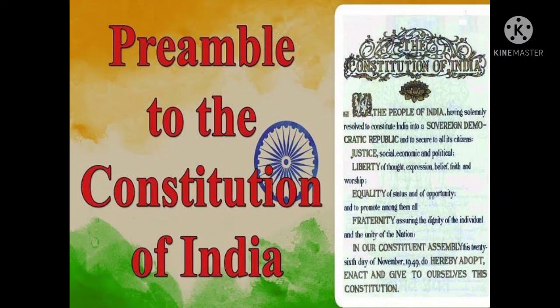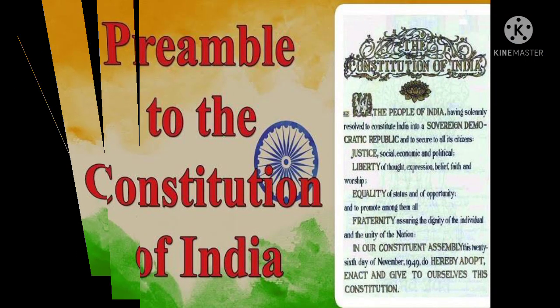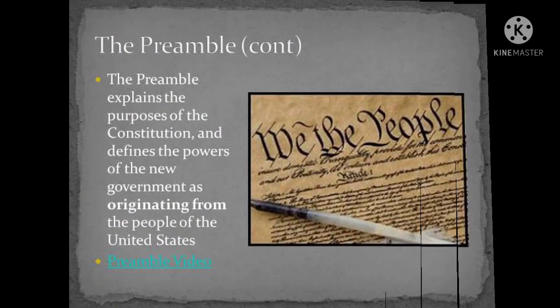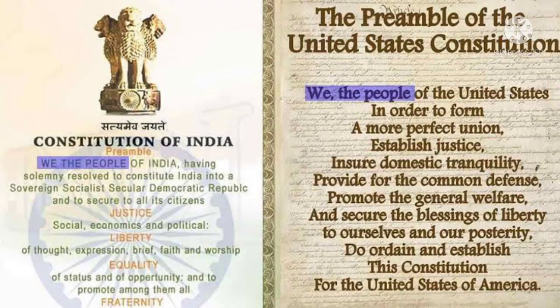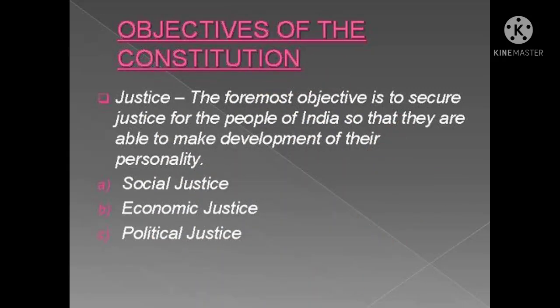The preamble defines the basic features and objectives of the constitution of India. It describes three important aspects of the constitution: the source of the constitution, the nature of the state, and the objectives of the constitution.